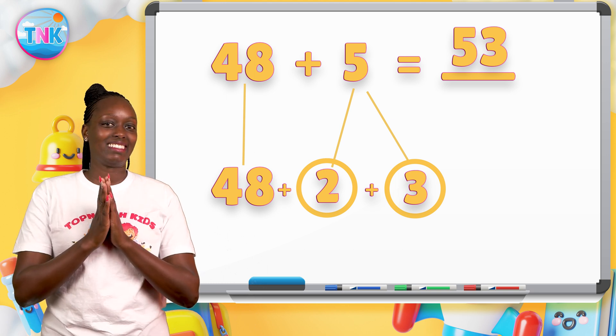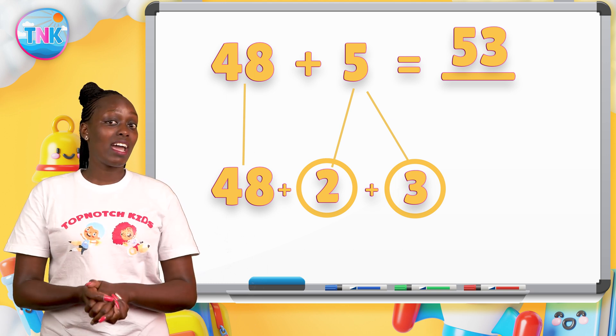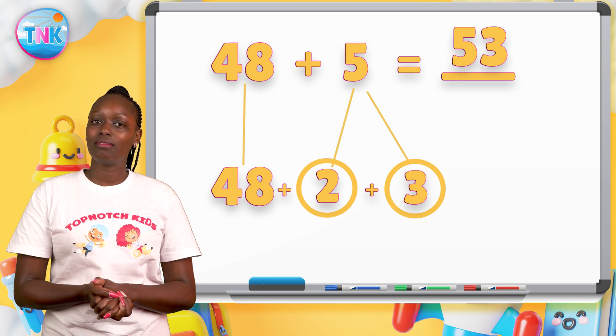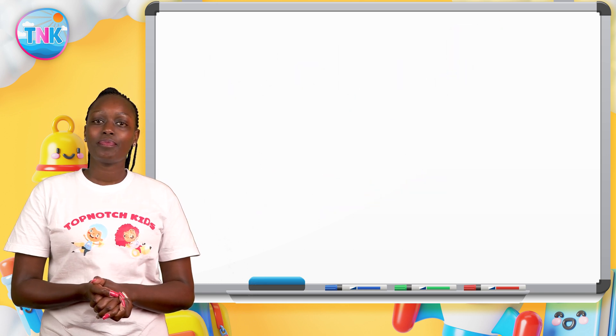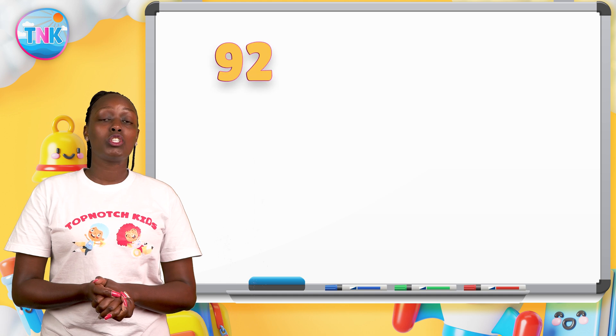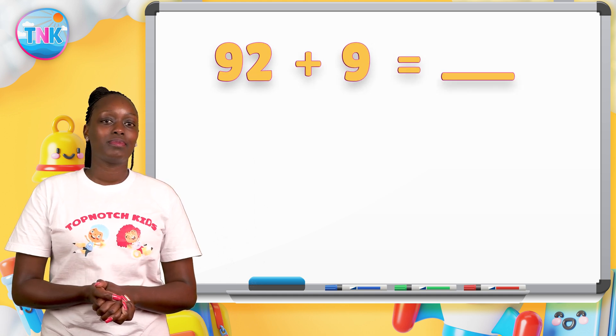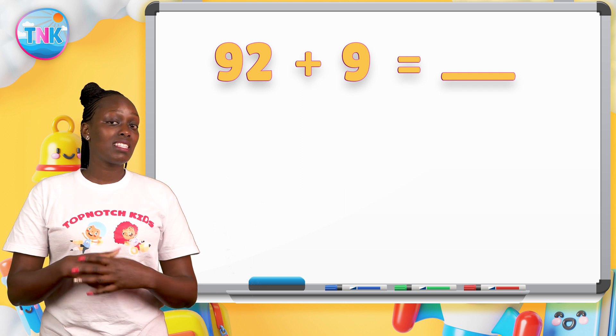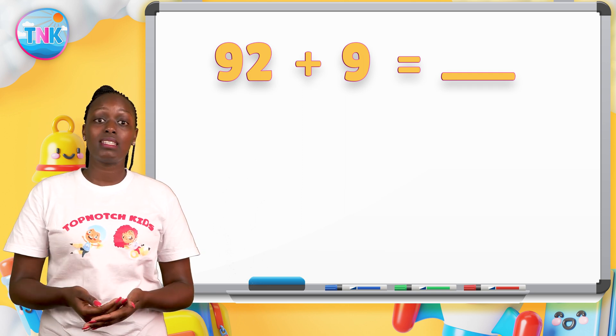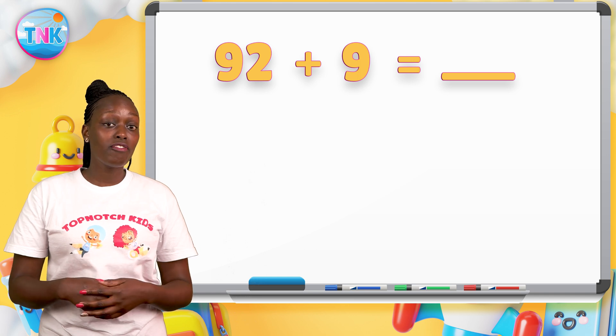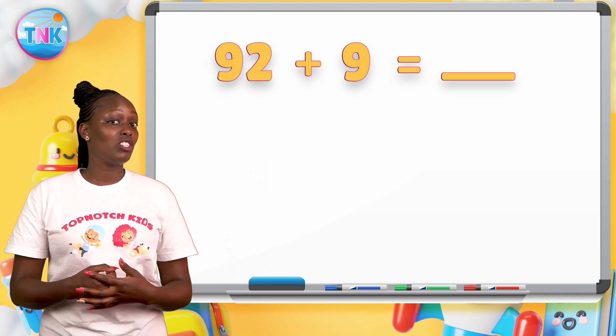Good job! Let's try the second example. Ninety-two plus nine. The first step is to change the two numbers into families of ten. Great job!